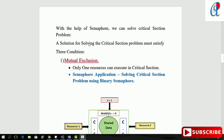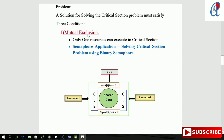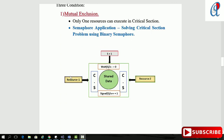If you compare the semaphore with mutex, there are certain advantages. We can solve the critical section problem. A solution for solving the critical section problem must satisfy three conditions: the first one is mutual exclusion — only one resource can execute in the critical section. The semaphore application for solving the critical section problem uses the binary semaphore.